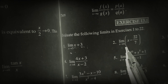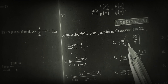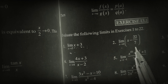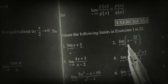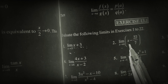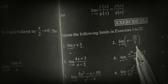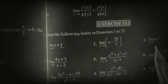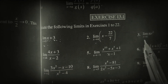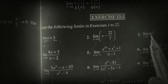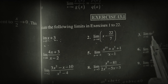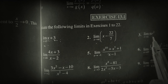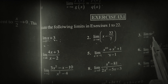Same here — limit x tends to π of (x − 22/7). If we put x = π, it is π − 22/7, which is the answer. Third part: limit r tends to 1 of πr². Put r = 1: it will be π×1² = π.